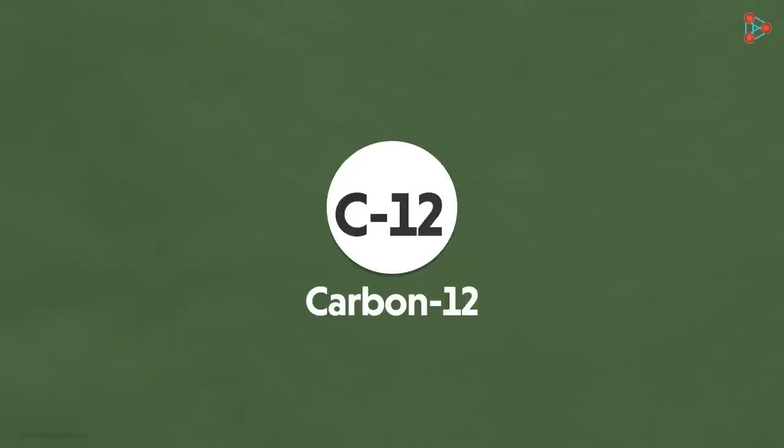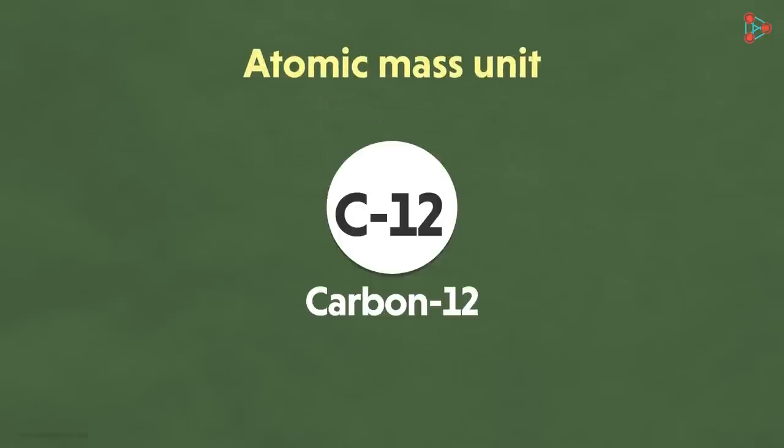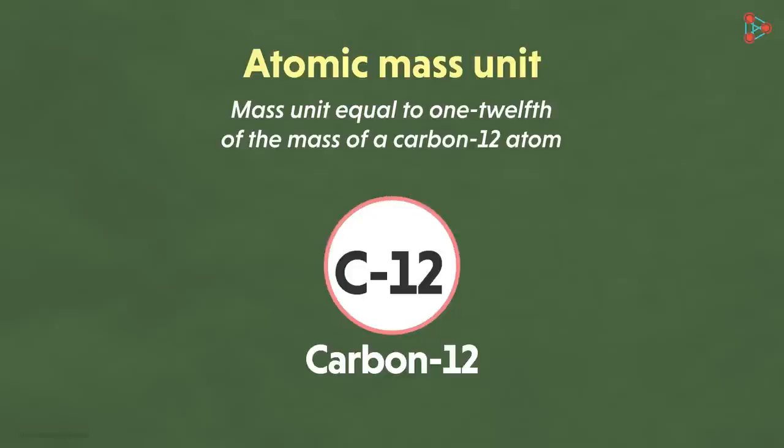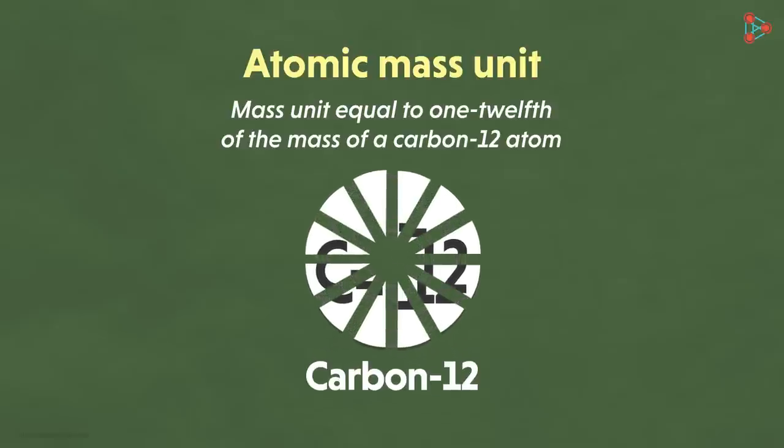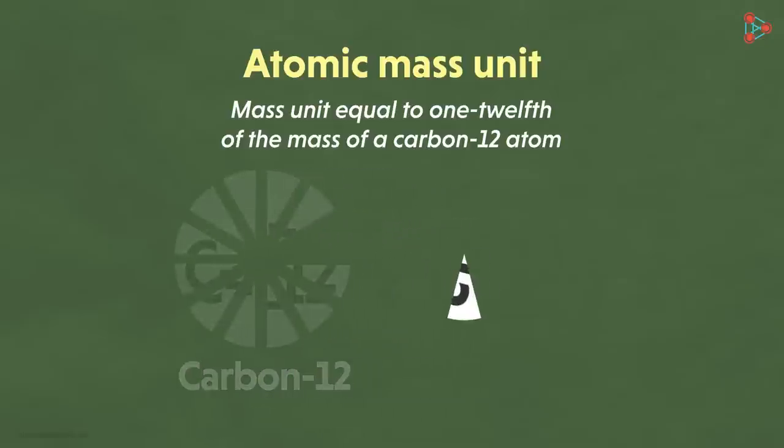Thus an atom of carbon 12 is considered to be a standard unit and atomic mass is calculated with respect to one atomic unit. And how do we define one atomic unit? One atomic mass unit is defined as the mass unit exactly equal to 1 twelfth of the mass of a carbon 12 atom. So let us assume this is one atom of carbon 12. We divide this in 12 exact equal pieces. We take one piece from this out of the complete unit. Can we say the mass of this single piece is one atomic mass unit? Absolutely!